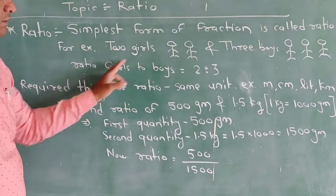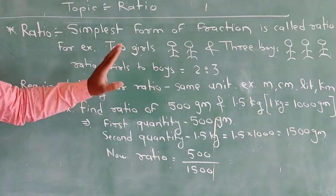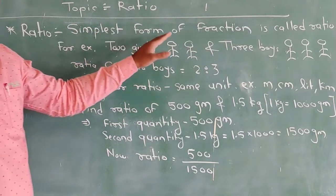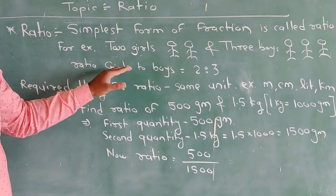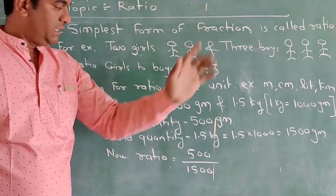In this way we write the ratio. Once again I repeat: the simplest form of a fraction is called the ratio. We take this example as two girls and three boys, and we can write the ratio as 2:3.